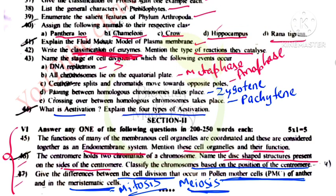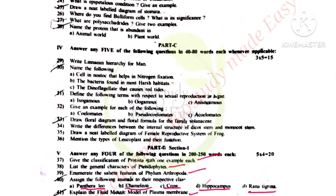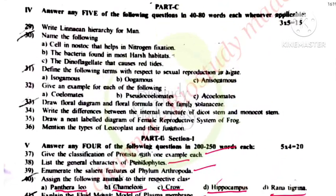Estivation is of four types. Next, Linnaean hierarchy for man — presented as a table. The cell in Nostoc that helps in nitrogen fixation is the heterocyst — that is the function of the heterocyst. Bacteria found in the most harsh habitats are archaebacteria.